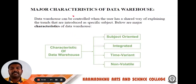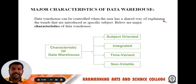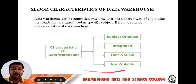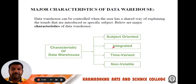The major characteristics of data warehouse — the below mentioned diagram exposes the major characteristics of data warehouse. First one, subject oriented. Second one, integrated. Third one, time variant. And fourth one, non-volatile.